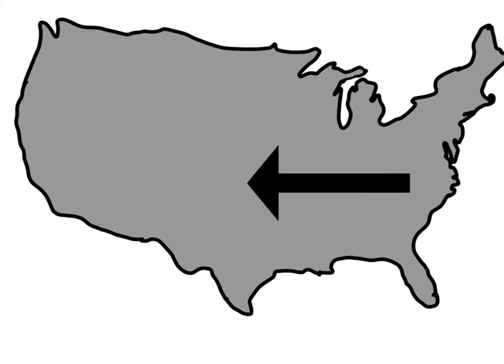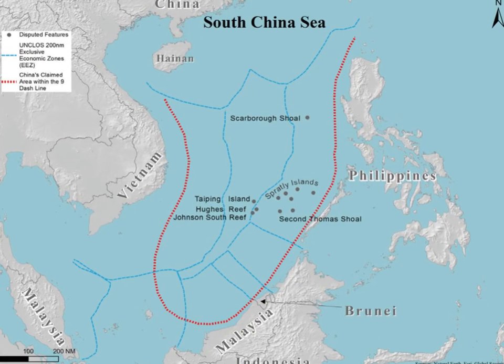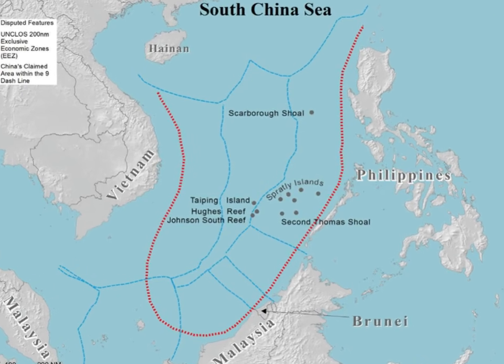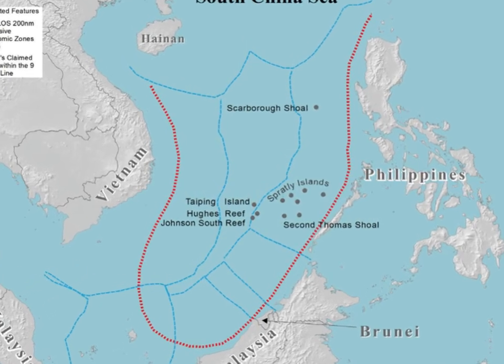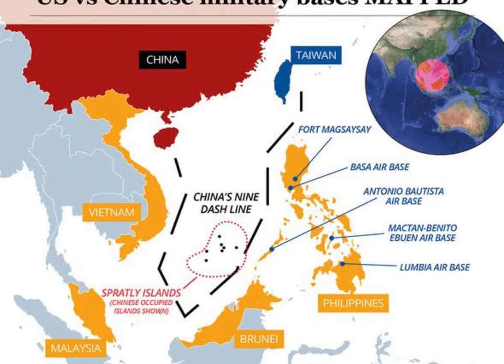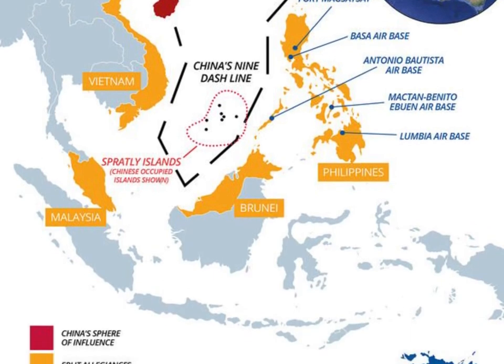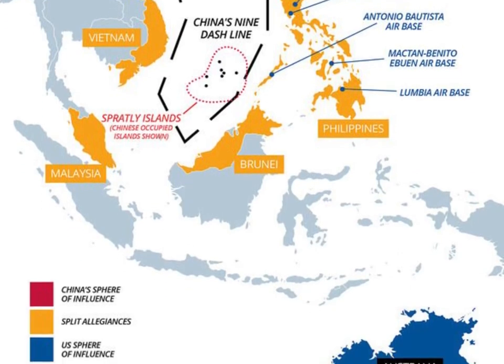We can link this event to today because, just like how the settlers had a shared belief that the land beyond was theirs, today many countries believe they own the South China Sea. Nations such as China, the US, and many Southeast Asian countries argue over who should own the South China Sea, and due to this, a sense of nationalism is created towards each one's nation.